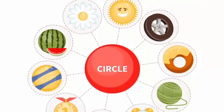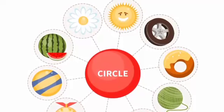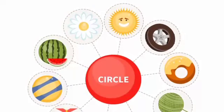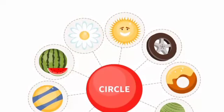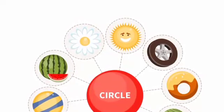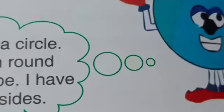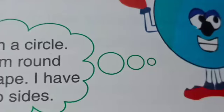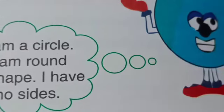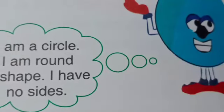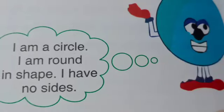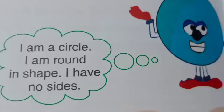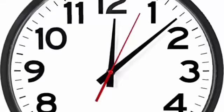The next shape is a circle. You can see many circular objects here — a wheel, the sun, the moon, a flower, a watermelon, and a ball. A circle has a round shape and has no sides at all. So a circle is round in shape and does not have any sides.